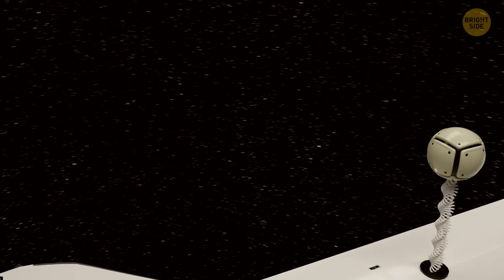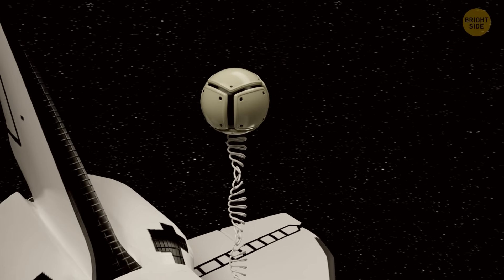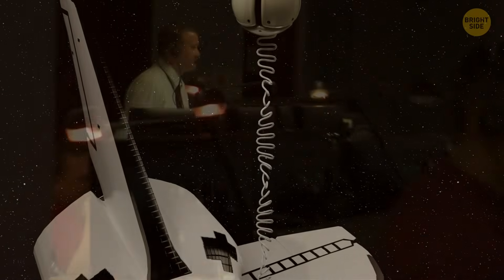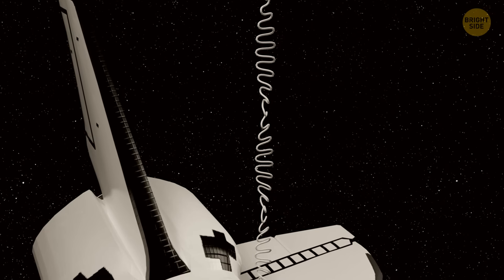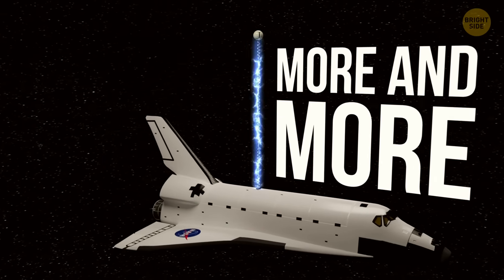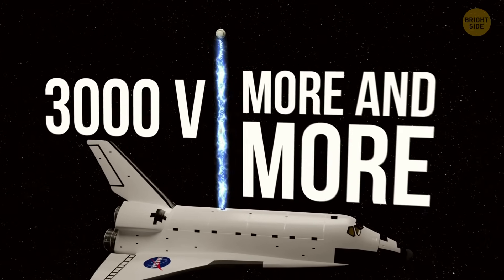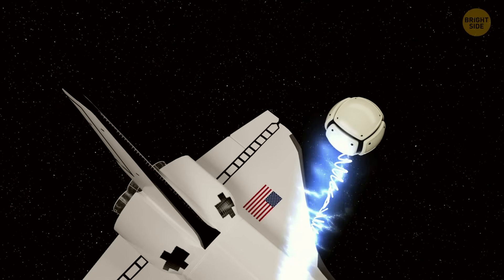At first, it was smooth sailing. The satellite glided away, the tether unreeled like a spool of cosmic fishing line, and the science team was buzzing with excitement. As the line stretched longer, it started generating more and more electricity, over 3,000 volts at its peak. Everything was running perfectly like a dream experiment.